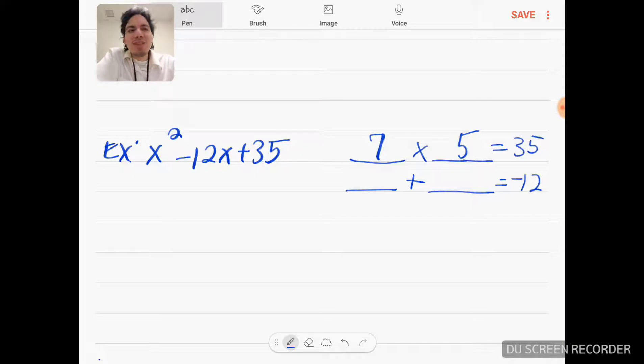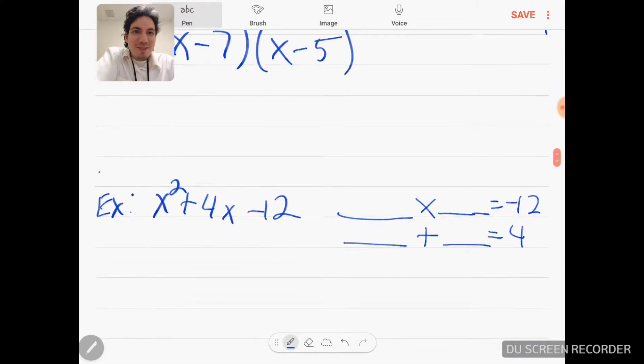That means these two numbers have to be negative, because negative times negative would be positive. And then when you have two negative numbers, when you add them you keep the same sign and you add the numbers, which would give me 12. So my factors here would be negative 7 and negative 5.